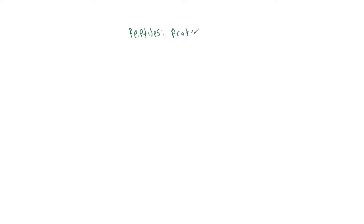The first class we'll discuss in detail is the peptide hormone. Peptide hormones are protein-based, and they need to be made through a process called transcription and translation — you might remember these from bio. Transcription and translation — and if it's been a long time since you've taken bio, that's okay, I've got you covered.